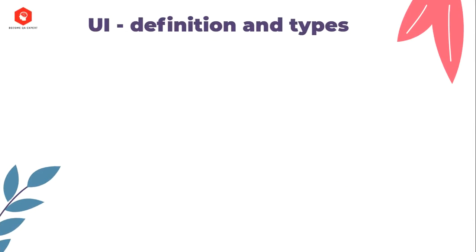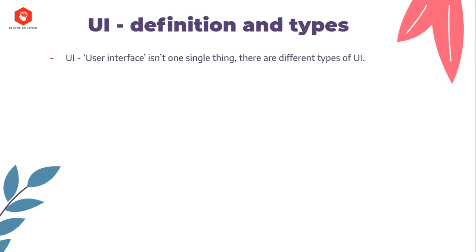UI definition and types. First we have to understand what is user interface in order to understand how to test it. User interface is not just one simple thing — there are different types of user interface. User interface is the thing that users are facing with, dealing with, in order to use the application or the website.